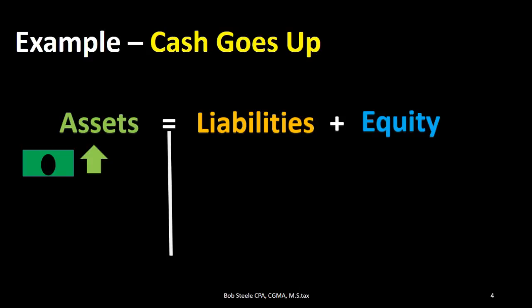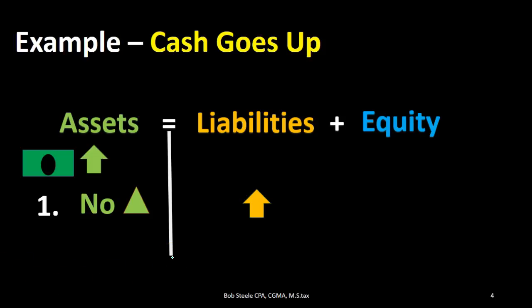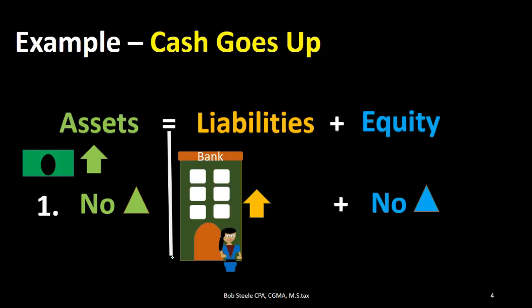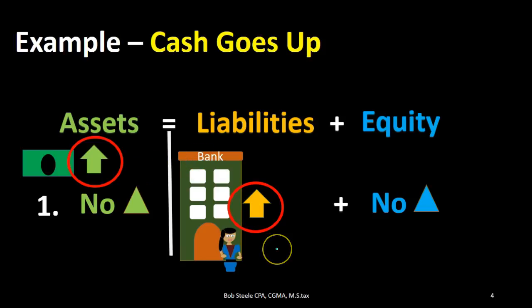For example, let's imagine that cash is going up. We don't know what the transaction is, but we know cash is going up — what are the possible scenarios for the other half of this transaction? One option: assets have no change overall, and liabilities increase. Maybe we got cash because we got a loan from the bank, which increases the liability as well. Under that scenario, equity has no change, so assets went up and liabilities went up — both sides of the equal sign went up, and we are still in balance.